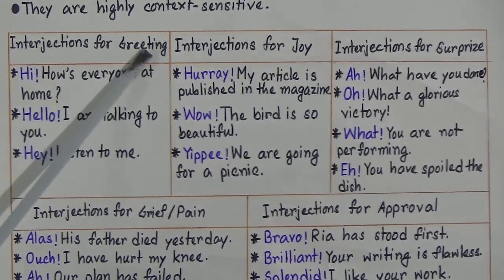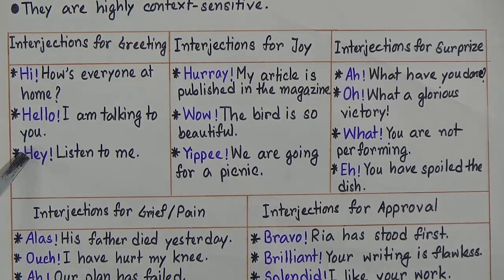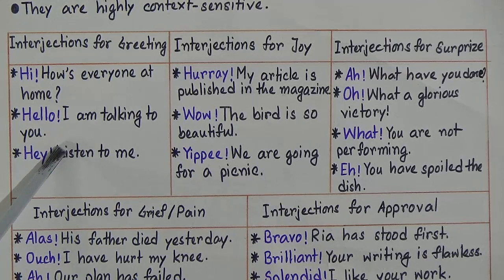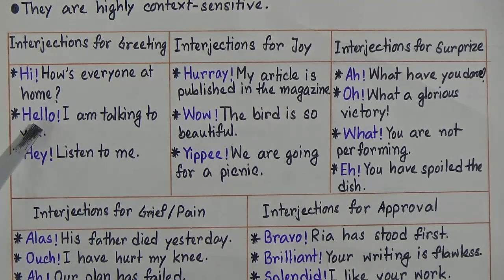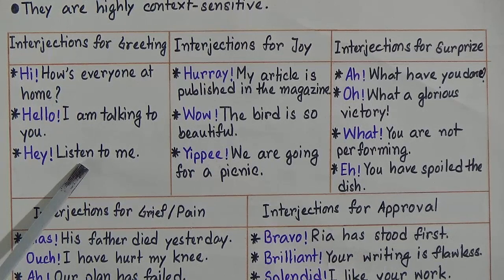Now look — we can use interjections in different situations. First, interjections for greeting — these interjections are used to greet any person. For example: Hi! How's everyone at home? Hello! I'm talking to you. Hey! Listen to me. So hi, hello, and hey are used to greet someone.